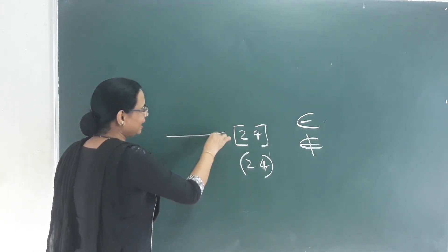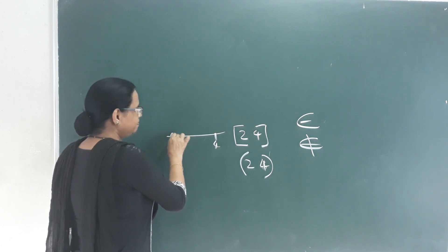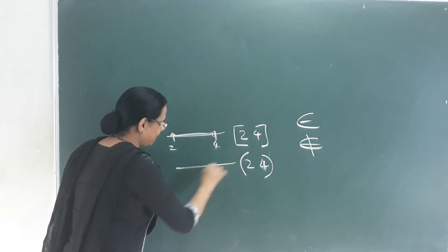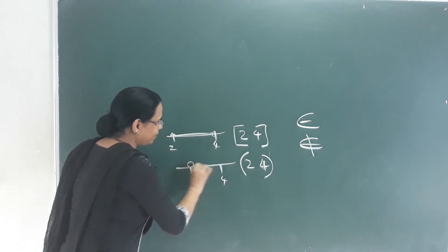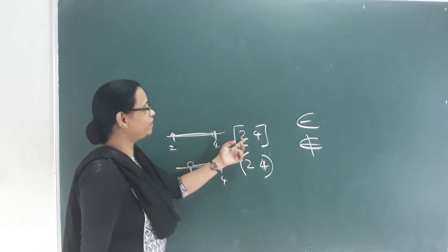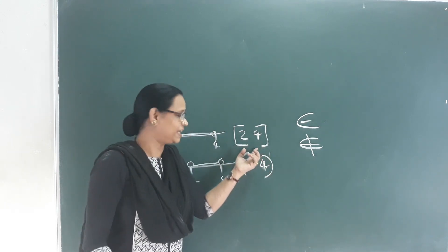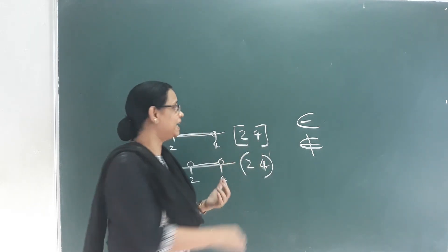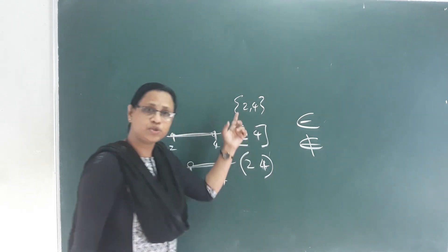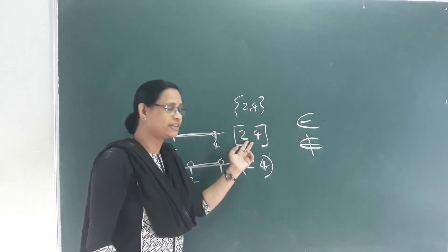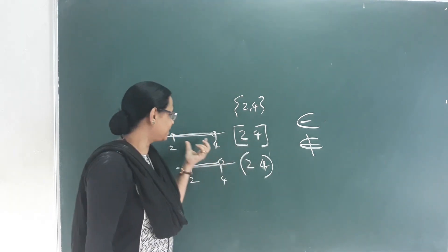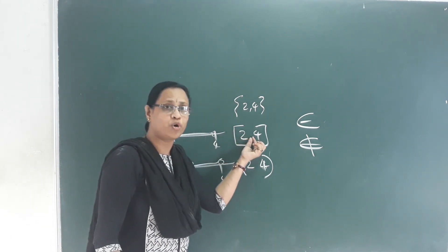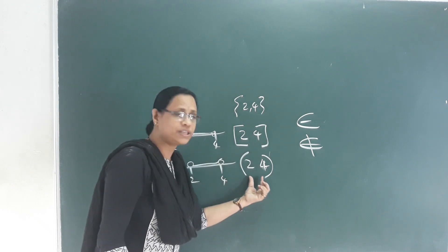On the number line, 2 and 4 are marked. In a closed interval, 2 including 4 means both endpoints are included. Graphically, we represent this on the number line. Between 2 and 4, there are infinitely many numbers. In a curly bracket set with only 2 and 4 marked, there are only two elements. But in an interval, there are many elements. An open bracket means excluding the endpoints.